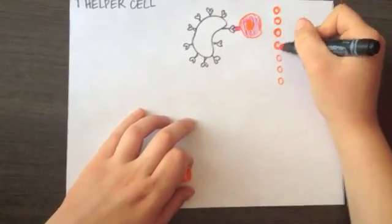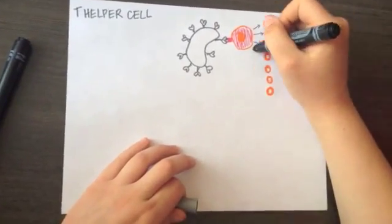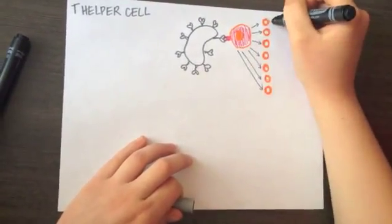Once helper T cells detect a virus fragment, they activate and divide. This is called clonal expansion. Some stay as memory cells in order to speed up the reaction in case of a next invasion.